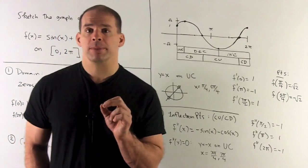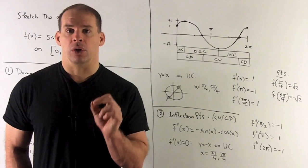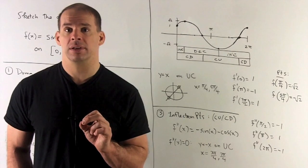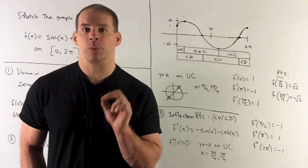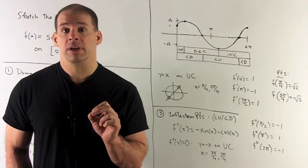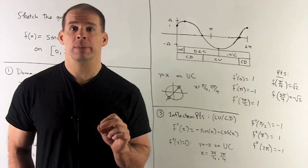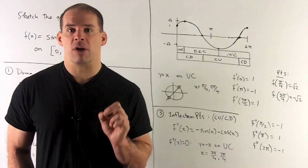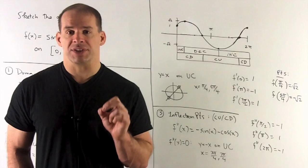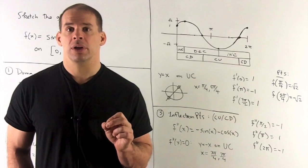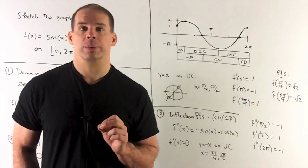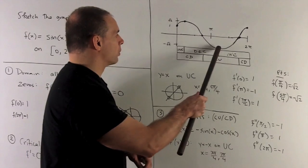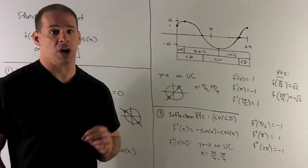We plot those critical points by substituting back into the original function. At π/4, sine and cosine are both √2/2, so adding them gives √2. At 5π/4, both sine and cosine are -√2/2, so adding them gives -√2. Plotting those points, we see a horizontal tangent line at π/4 high up, and another horizontal tangent line at 5π/4 down below.